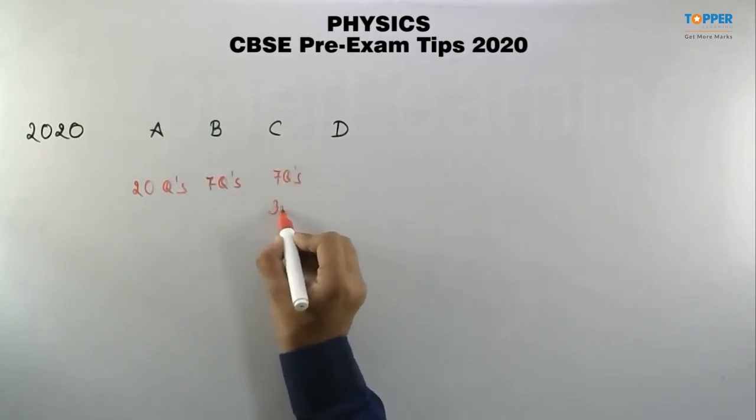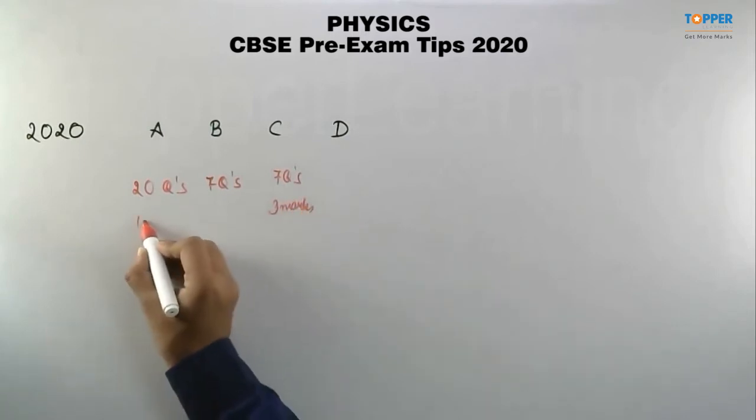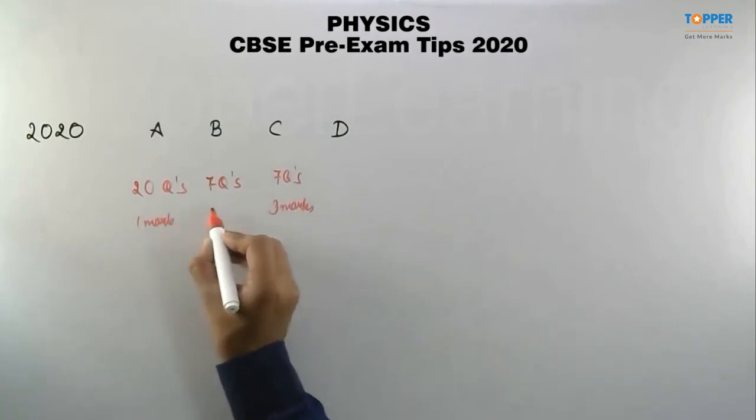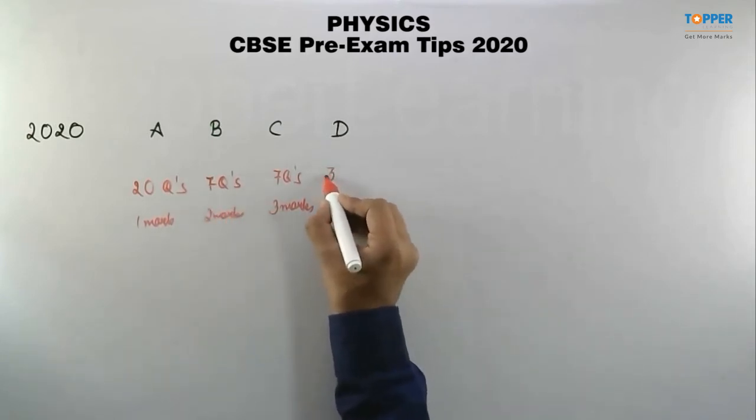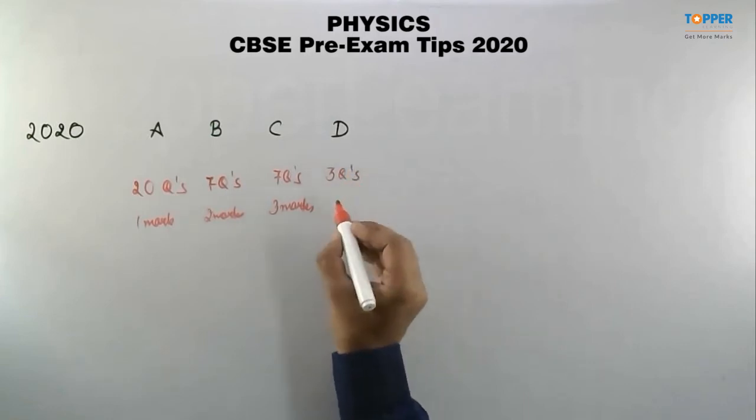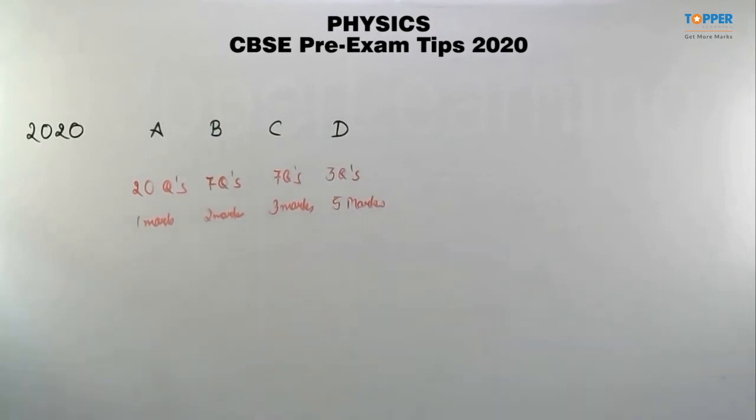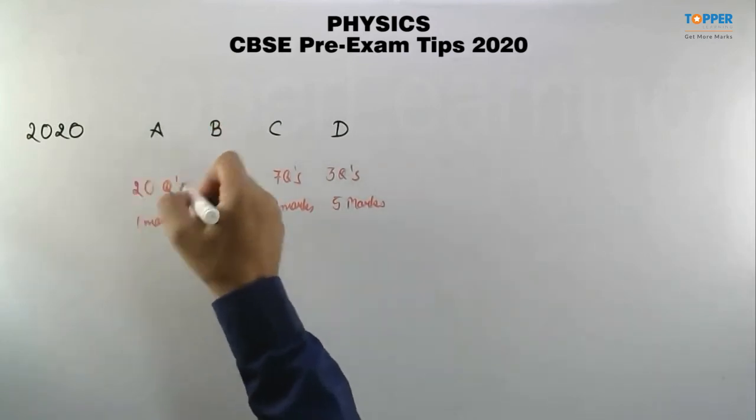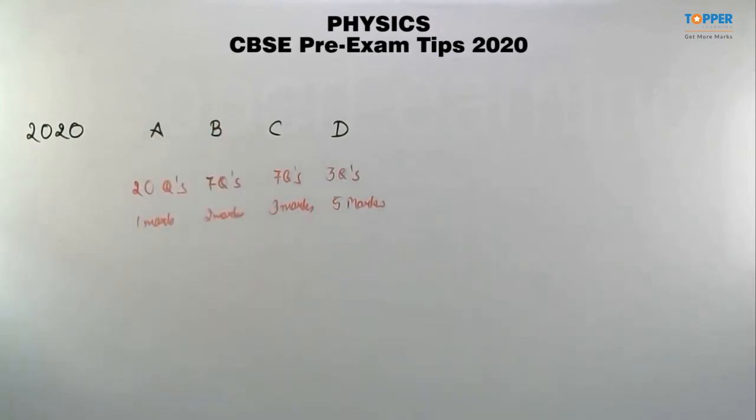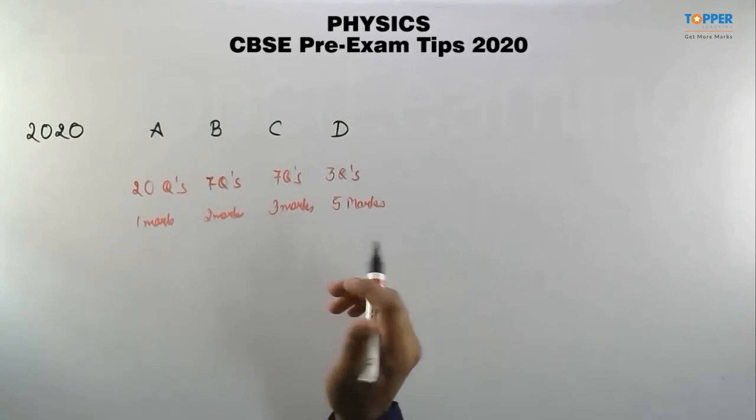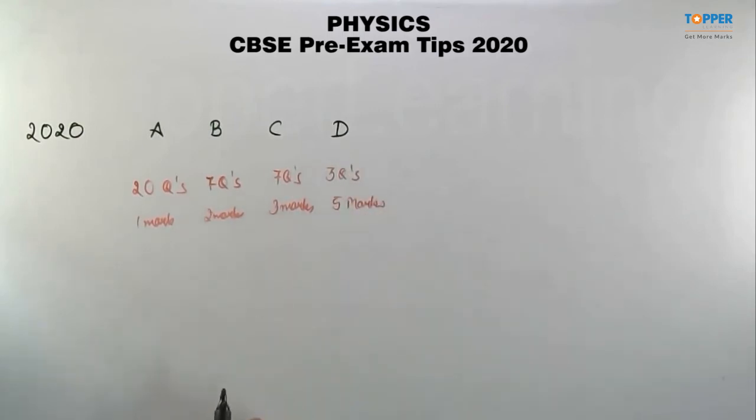Section D contains three questions of five marks each. This is the new exam pattern in which there are more questions in Section A. Internal choices are provided in a few questions - all three questions in Section D have internal choices.